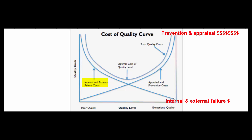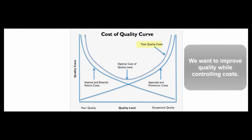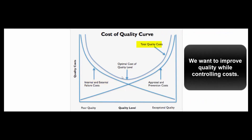We want to optimize the combination of conformance costs and non-conformance costs. This curve here represents our total quality cost, and this spot here is the optimal cost of quality. We've got very good quality, but not necessarily 100% perfect.